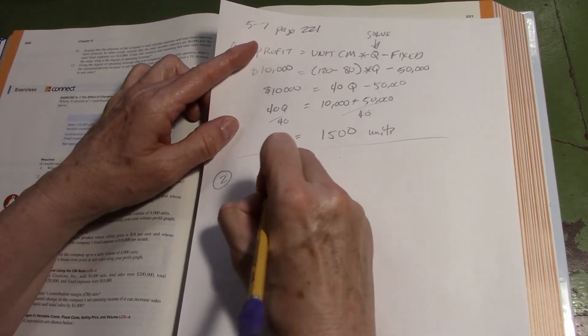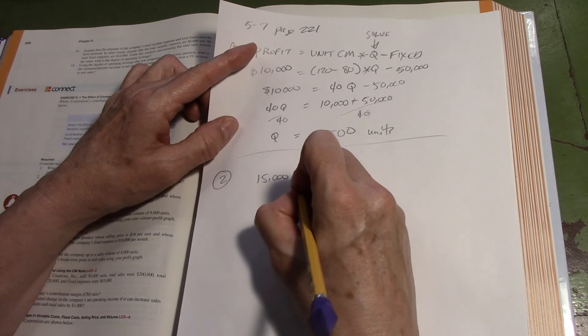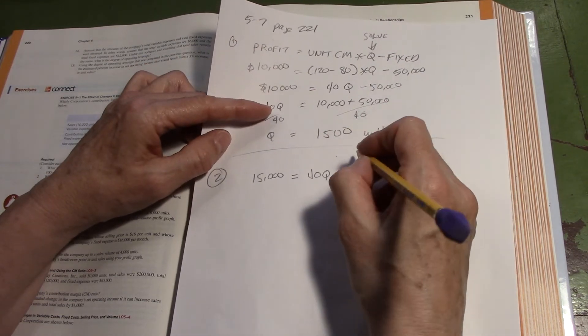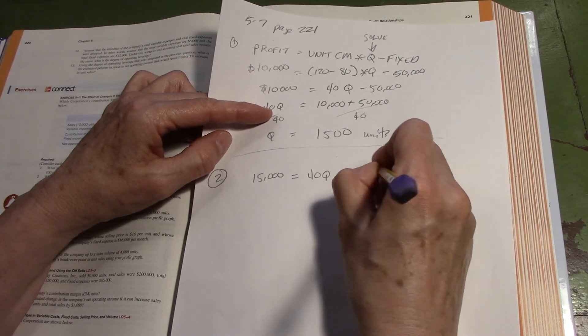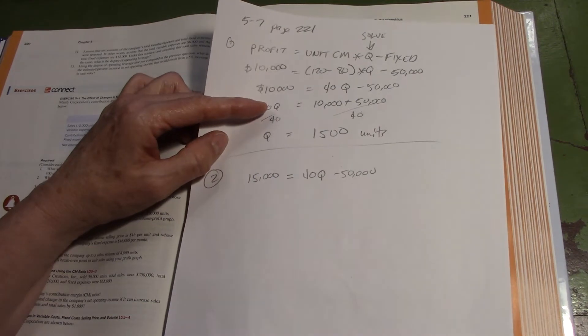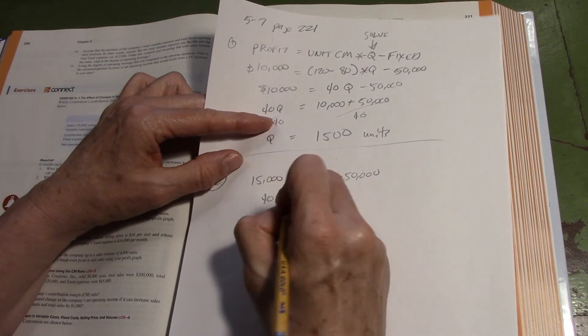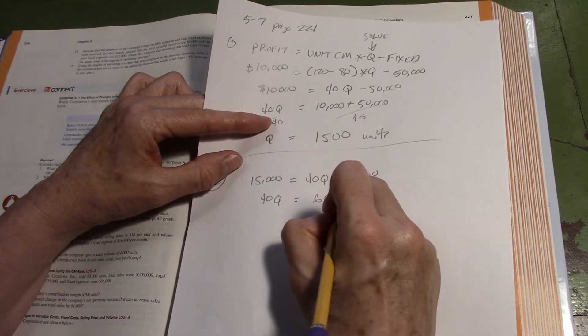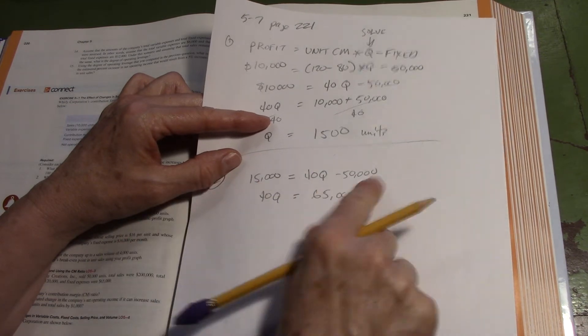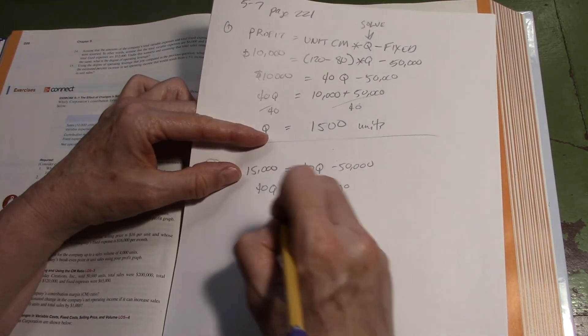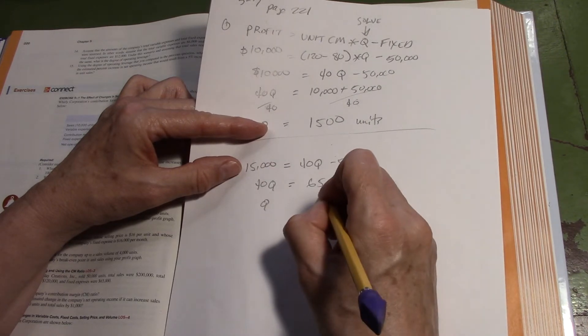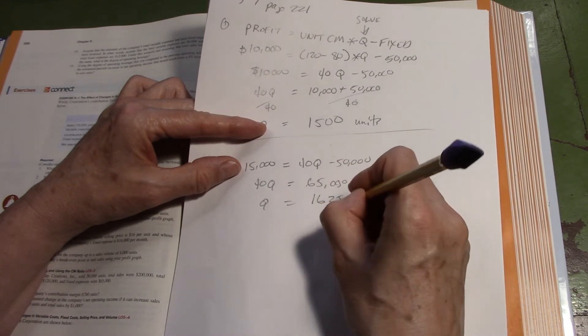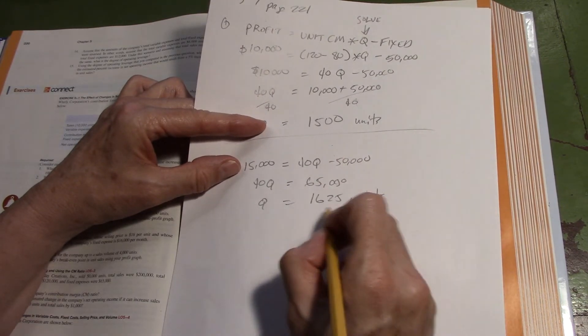Everything else is the same. 15,000 equals, I'm just going to write 40Q minus 50,000. I'm not going to rewrite all of that. So we get 40Q equals 65,000. I bring that over here - 15,000 plus 50,000 is 65,000. Divide each side by 40, and I get Q equals 65,000 divided by 40, which is 1,625 units.